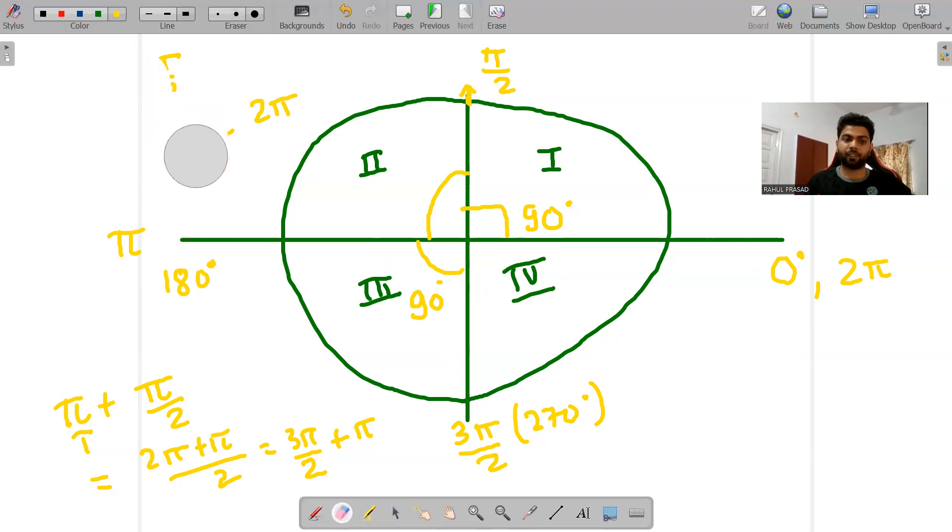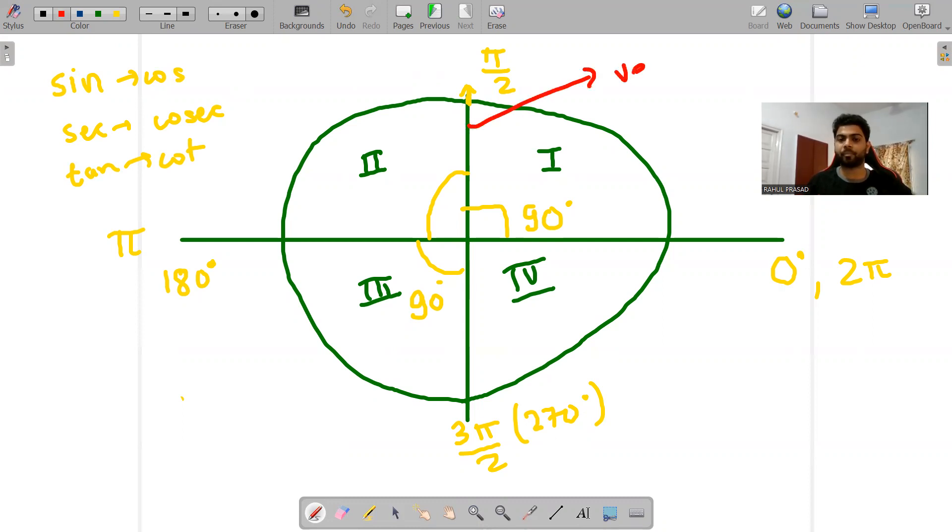The function interconversion between sine and cos, sec and cosec, and tan and cot. This will happen only and only along this vertical line. Vertical line. And now how it will change, for example.